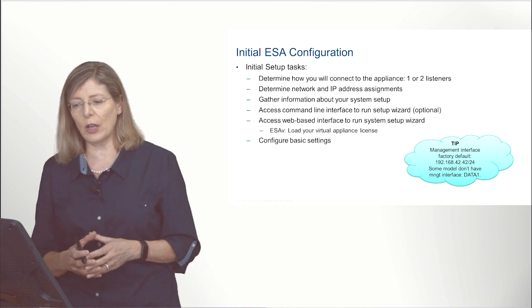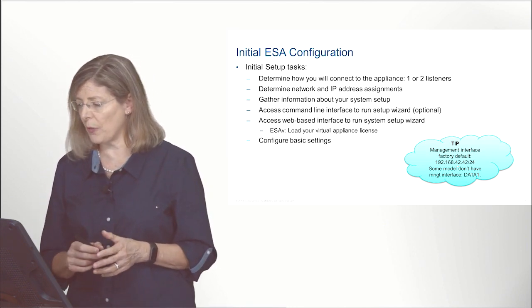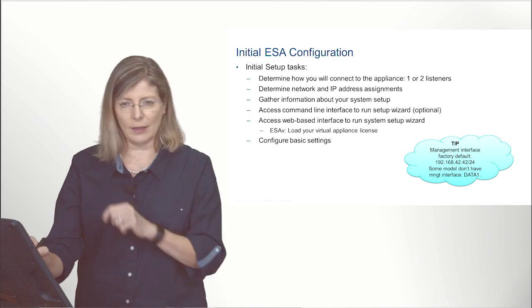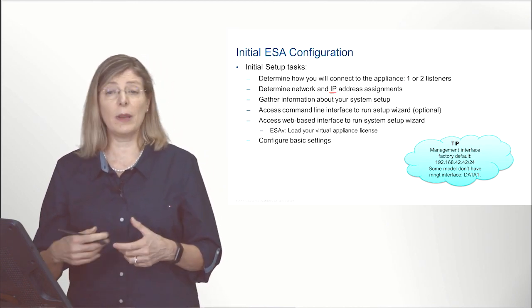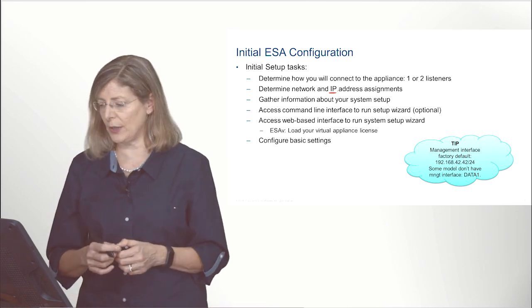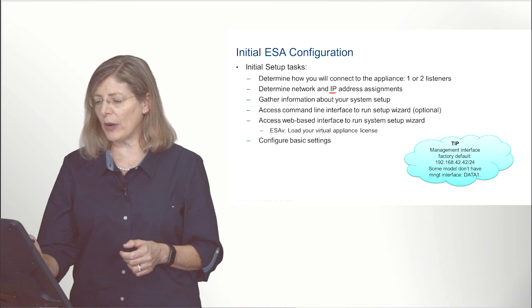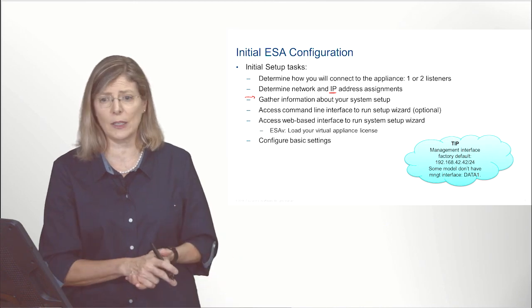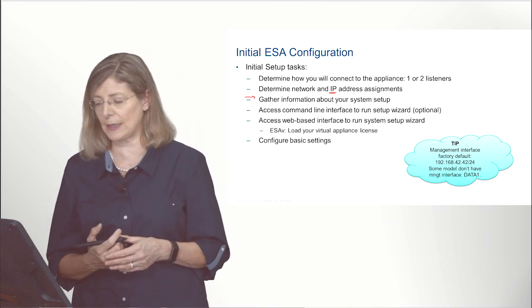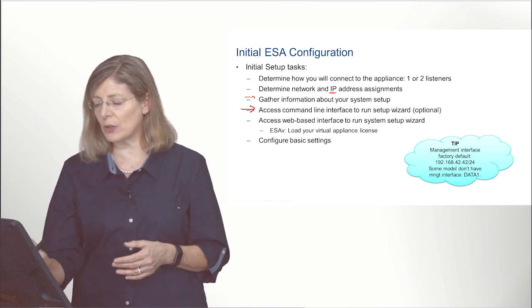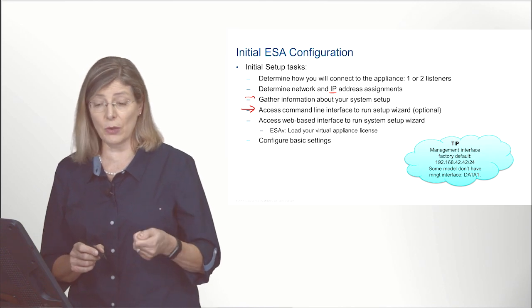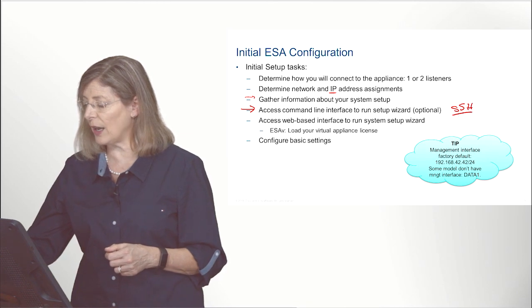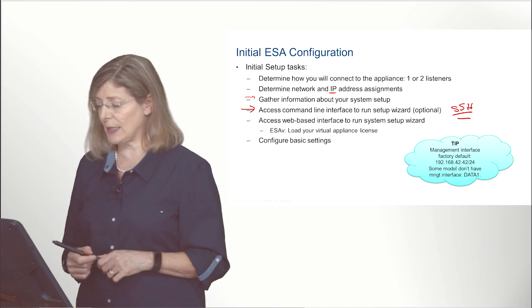For the initial configuration, we first need to decide whether we want one listener or two listeners — more on that in upcoming videos. We also need to know what the IP address will be on the interface used by the listener. We need to gather network information such as the domain name server on our network and the hostname we want to give to the ESA appliance. Then we can connect to the command line either via the console port or via SSH.